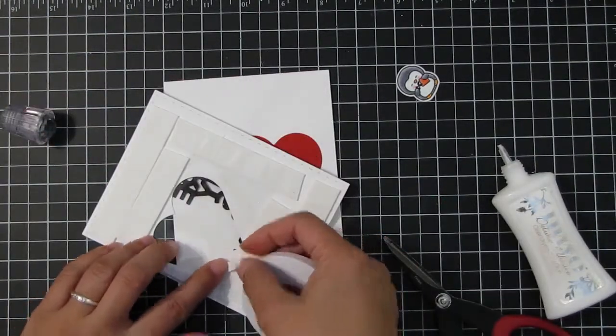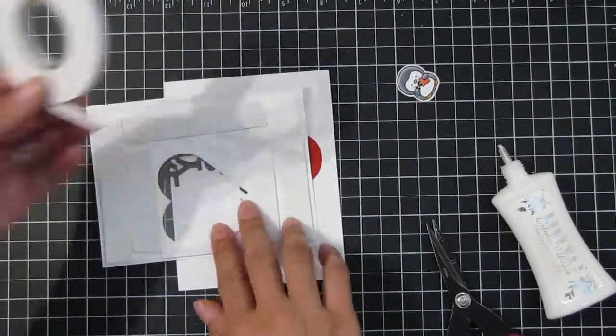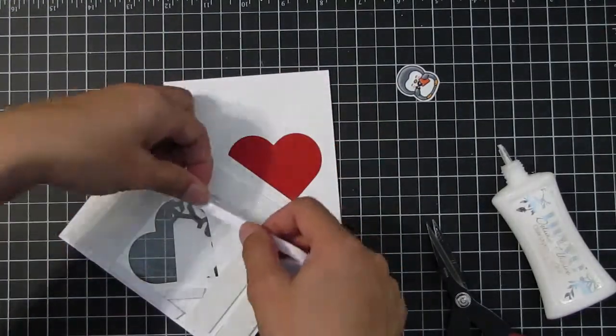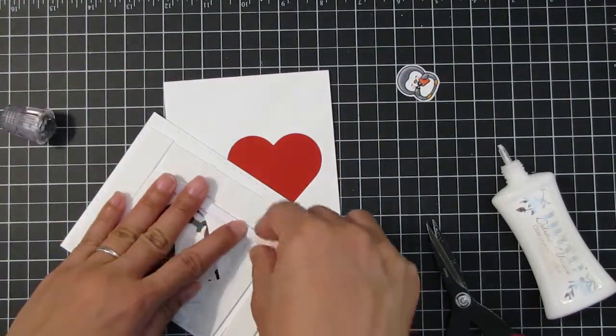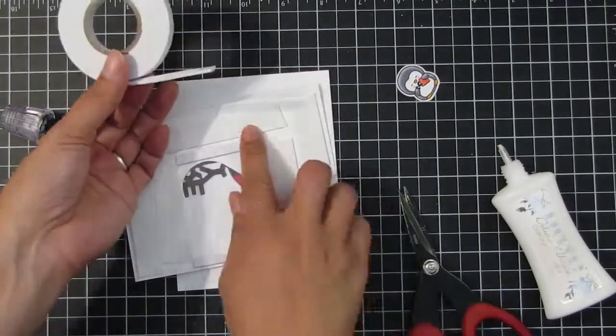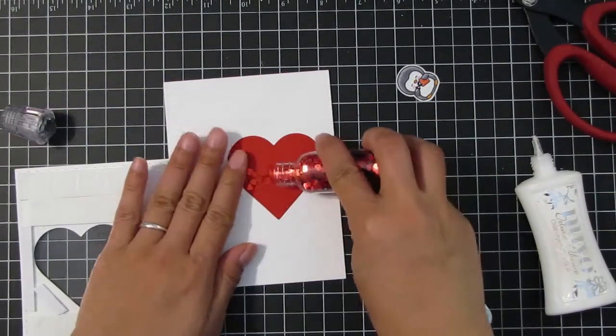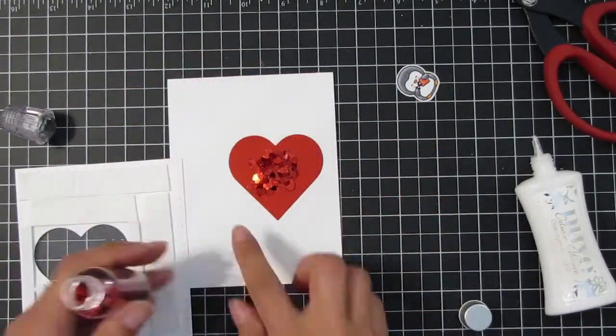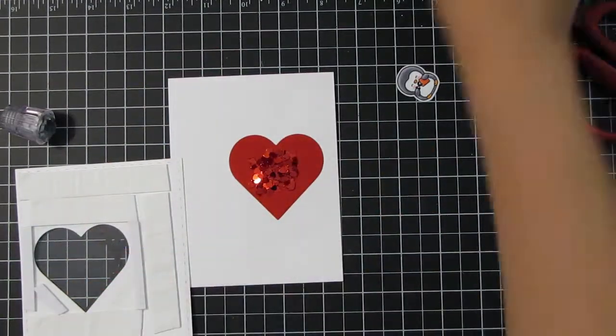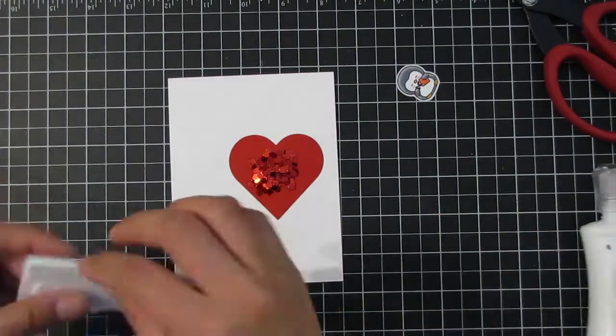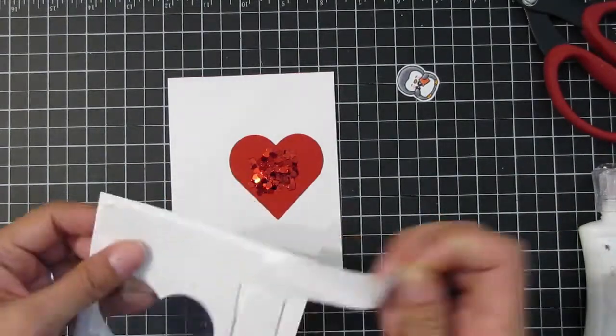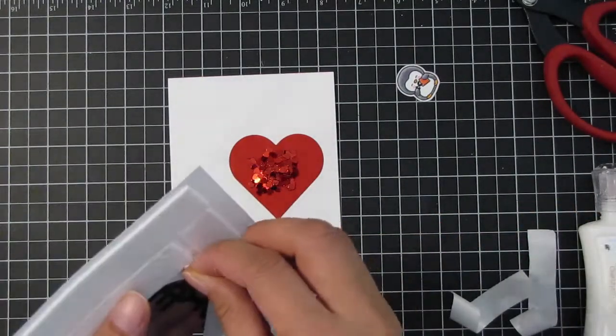When I seal off the card with the sequins, none of it will be falling out when the recipient shakes the card. Here is my sequin of choice—it's some red metallic hearts. I just put a generous amount in the center, avoiding the edges.